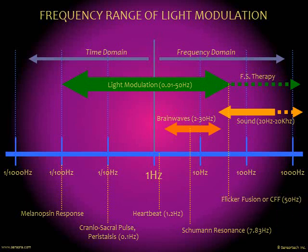The flicker fusion frequency is the maximum frequency at which you will still perceive pulses. Beyond that, you will perceive a uniform field. And going below this frequency, we can bring the rhythm down to very, very long and slow rhythms — all the way to rhythms taking over a full minute to unfold. There are biological rhythms within us that are that slow, for example the melanopsin response in the retinal cells.